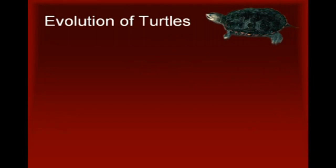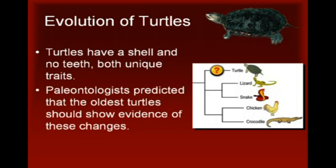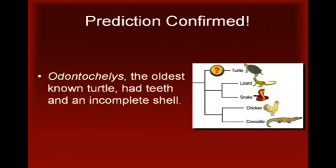A second example involves the evolution of turtles. Turtles are unique among existing reptile groups in that they have a beak instead of teeth, and their bodies are protected by a bony shell. In modern-day turtle embryos, the lower shell forms first, and then the ribs and backbone expand and widen to form the upper shell. Based on this evidence, some herpetologists have hypothesized that the lower shell probably formed first in turtle evolution, followed by an outgrowth and broadening of the ribs and the backbone to form the upper shell. Paleontologists predicted that the oldest turtles should show evidence of these changes.